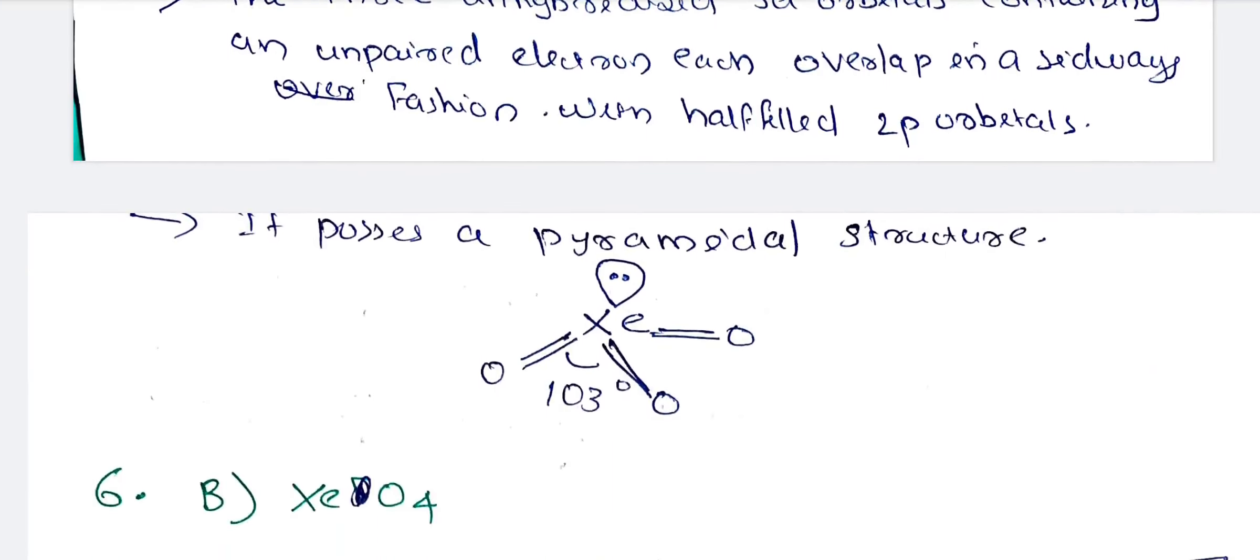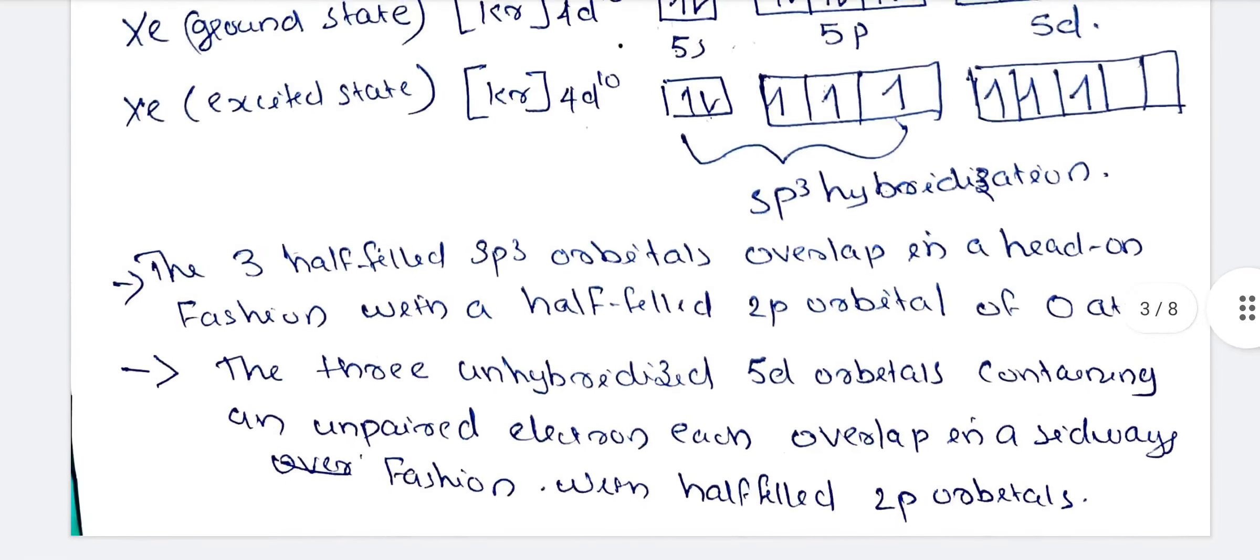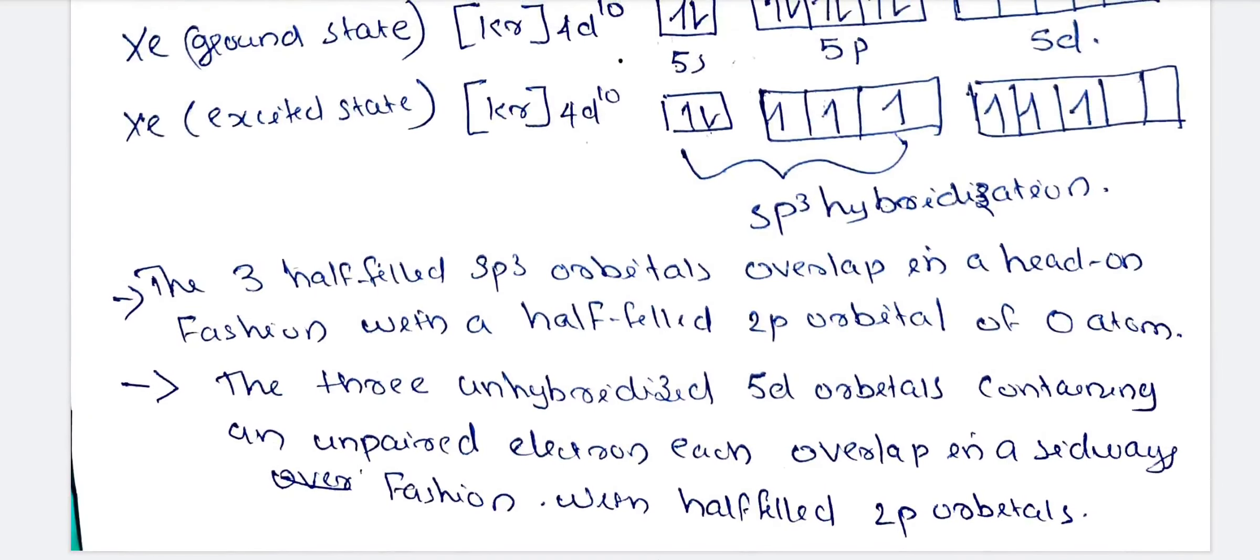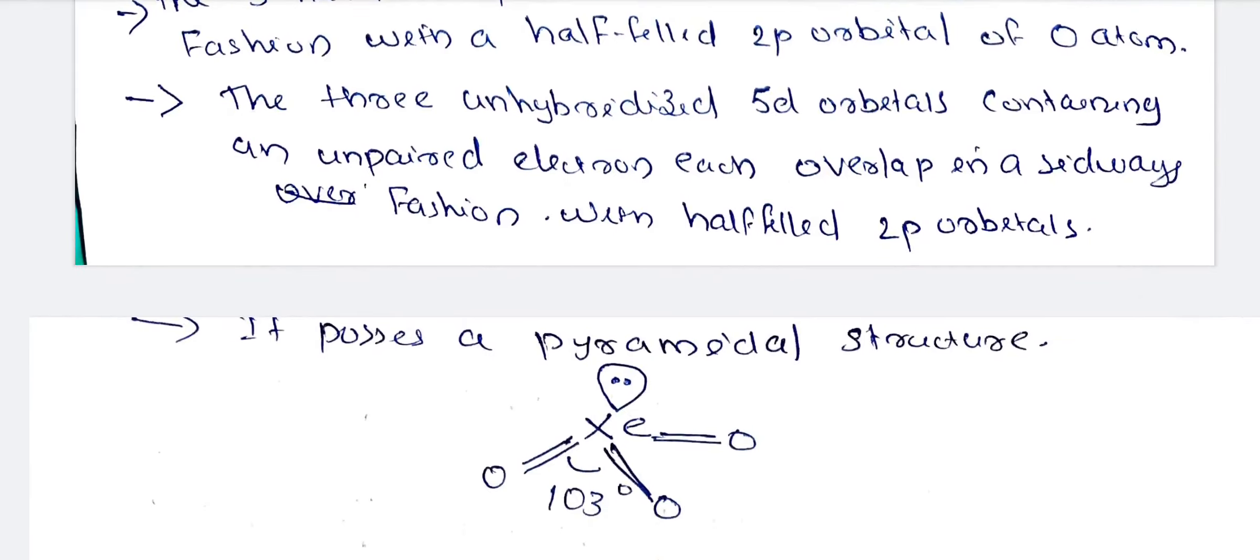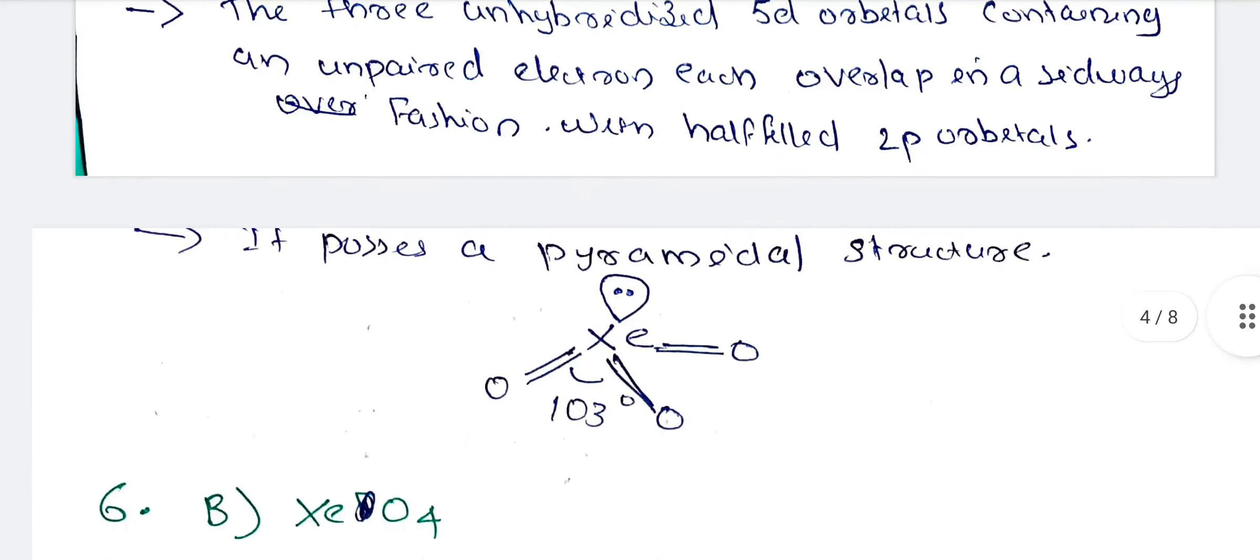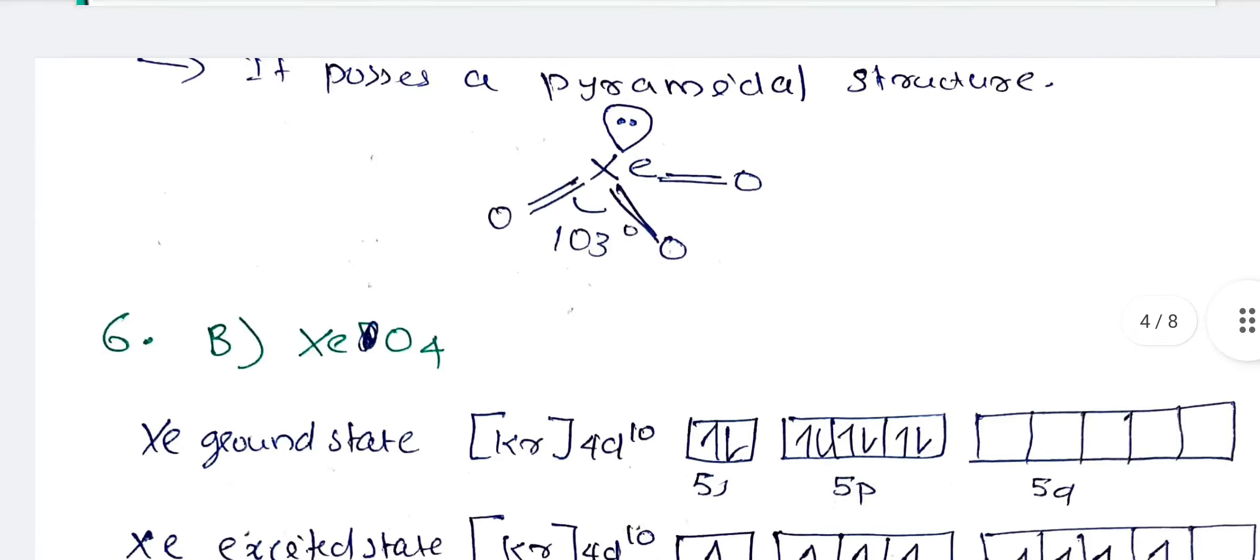This is the pyramidal structure. The unhybridized 5d orbitals, there are 3 orbitals with side-ways overlap. This gives the pyramidal structure with a bond angle of 103 degrees.